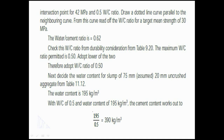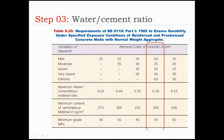With the water-cement ratio of 0.5 (the lesser value from durability requirements) and water content of 195 kg/m³, we can calculate the cement content. Cement content = water content / water-cement ratio = 195 / 0.5 = 390 kg/m³. We check this against the durability table — the minimum cement content from durability is 350 kg/m³. Out of 350 and 390, we take the greater value, which is 390 kg/m³.